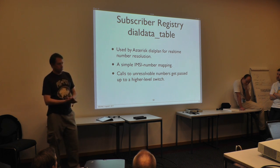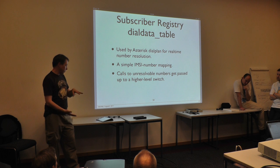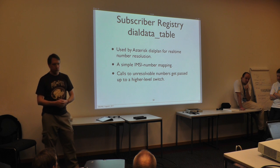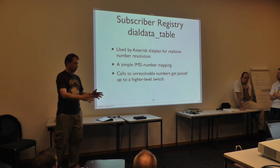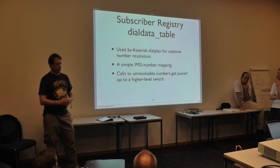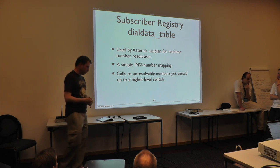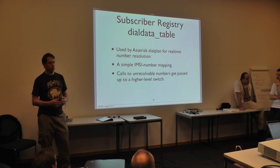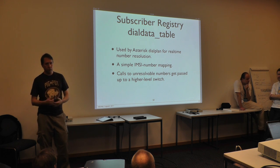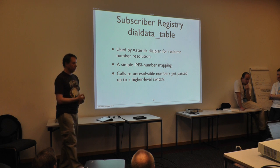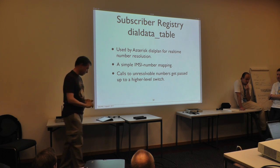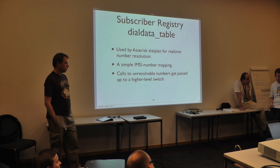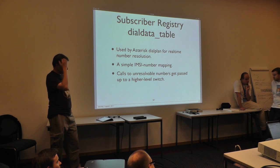The second table in the database is the dialing table. All it does is associate phone numbers with IMSIs — if someone dials this number, route it to that IMSI. You can have multiple phone numbers associated with any given IMSI, as long as you have some rule on which one to use as caller ID. You can use wildcards too — for example, take the last five digits dialed and tag them onto an IMSI.